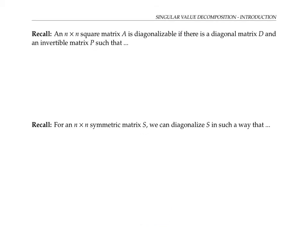Recall that an n by n square matrix A is said to be diagonalizable if there's a diagonal matrix D and an invertible matrix P such that A can be written as P times D times P inverse.